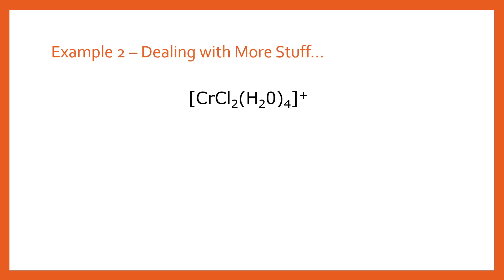Now let's look at a slightly more difficult example. We're going to deal with slightly more stuff. So this one looks more complicated. It's got more things in there. You've got a chlorine ligand and you've also got an aqua ligand, that H2O. And we're going to follow the same process and you'll see how this one works as well.